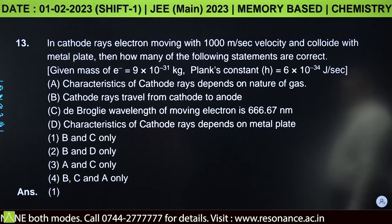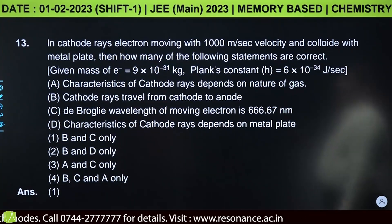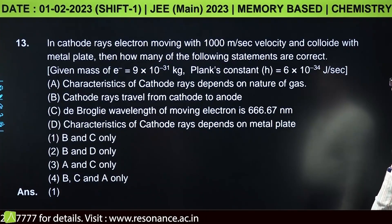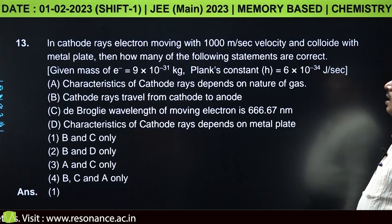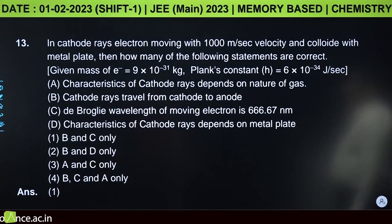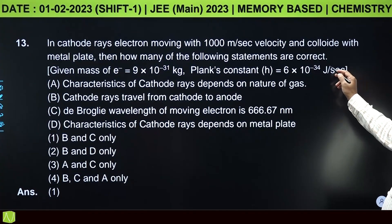From atomic structure: in cathode rays, electron is moving with 1000 meter per second velocity and collides with metal plate. How many of the following statements are correct? Given mass of electron 9 × 10-31 kg and Planck's constant 6 × 10-34 joule second.